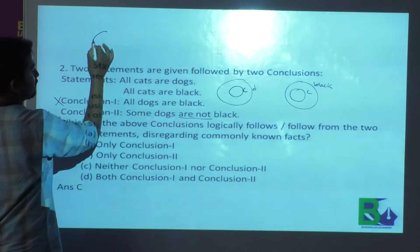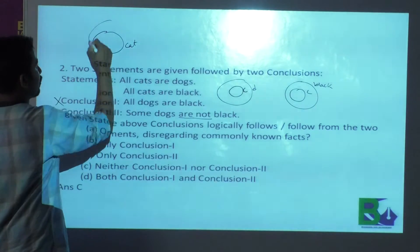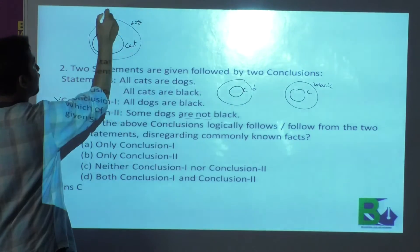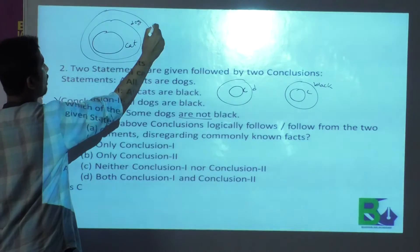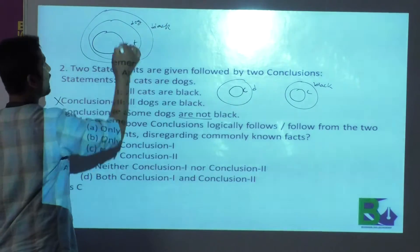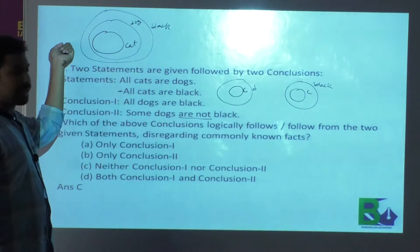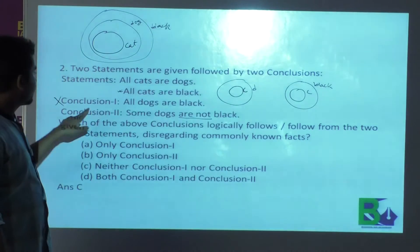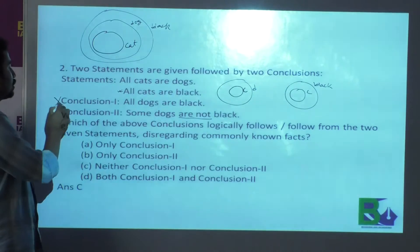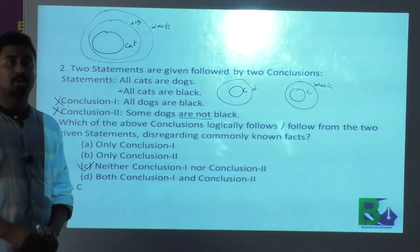In the alternative diagram, suppose this is cat, and this is dog — since all cats are dogs. It may be possible that this is black. Then conclusion two is also satisfied because all cats are black and all cats are dogs. So it may be an alternative figure. If we consider this alternative figure, then conclusion two is also not correct. So both conclusion one and conclusion two are incorrect — we can go for option C: neither conclusion one nor conclusion two is correct.